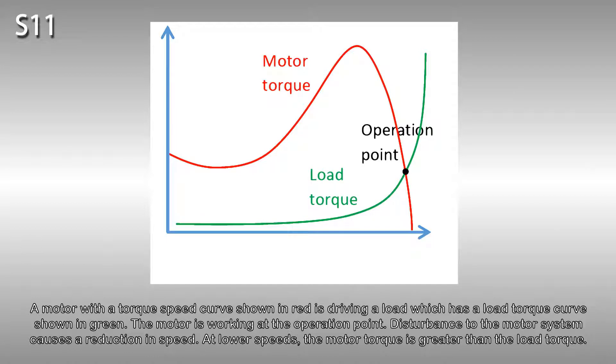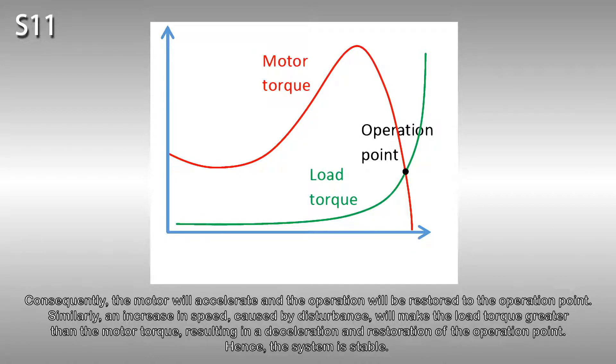Consequently, the motor will accelerate and the operation will be restored to the operation point. Similarly, an increase in speed caused by disturbance will make the load torque greater than the motor torque, resulting in a deceleration and restoration of the operation point. Hence, the system is stable.